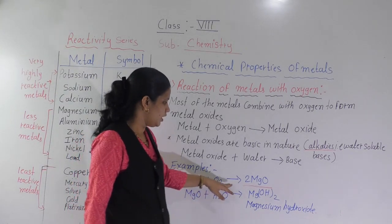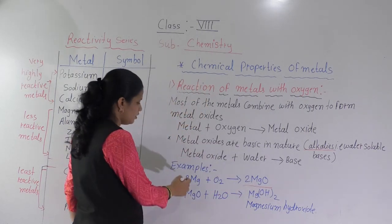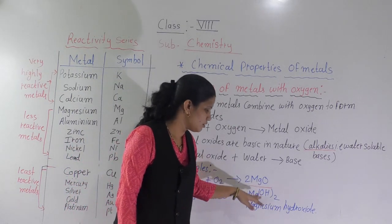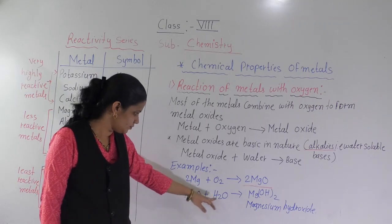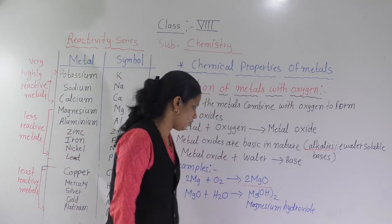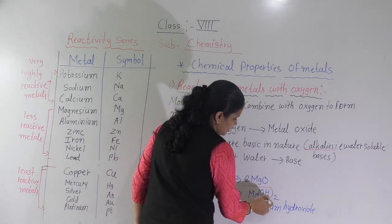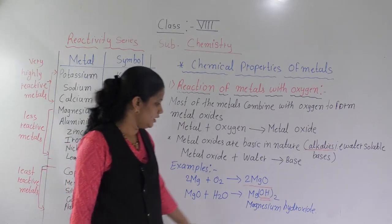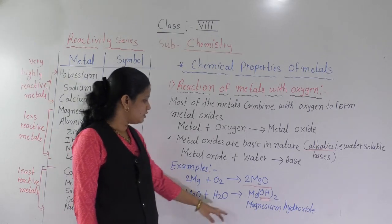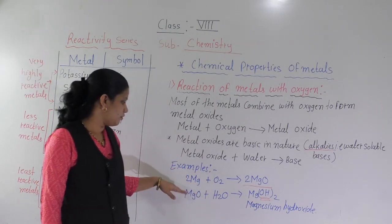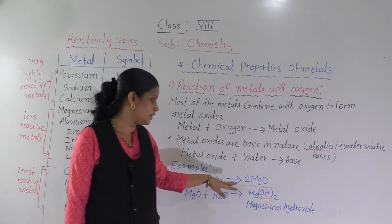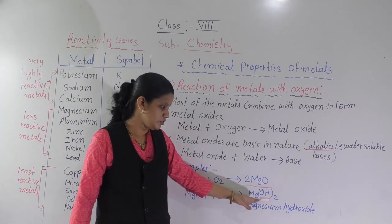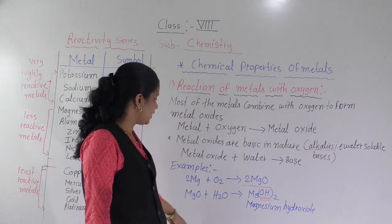The equation is: Mg + O2 gives 2MgO. Balance this reaction by putting the correct numbers. And when you add water to magnesium oxide — MgO + H2O — it will form magnesium hydroxide (Mg(OH)2). Here the OH group is present. In last year's study, we learned that hydroxide means the OH group, which is basic in nature.